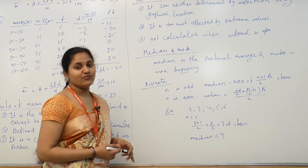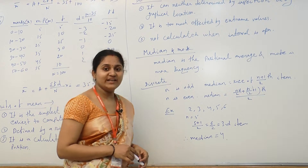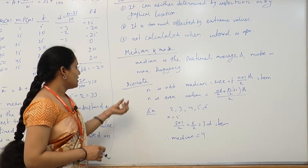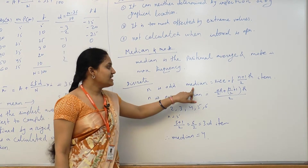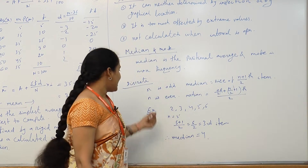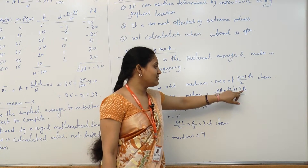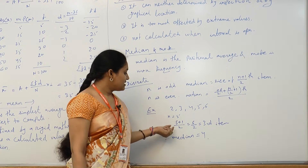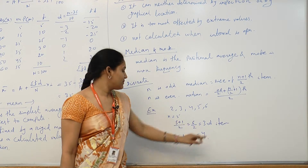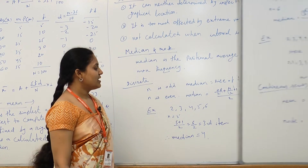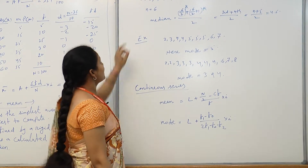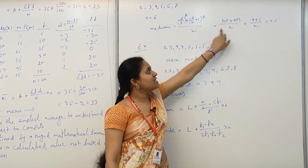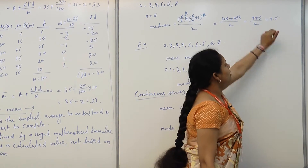Now let's move to median and mode. For the discrete case, if n is odd, median = the value of the ((n+1)/2)th item. If n is even, median = (nth/2 item + (n/2 + 1)th item) / 2. For example, for data 2, 3, 4, 5, 6 with n = 5: median = (5+1)/2 = 3rd item = 4. For an even example with n = 6: median = (3rd + 4th item) / 2 = (4 + 5) / 2 = 4.5.